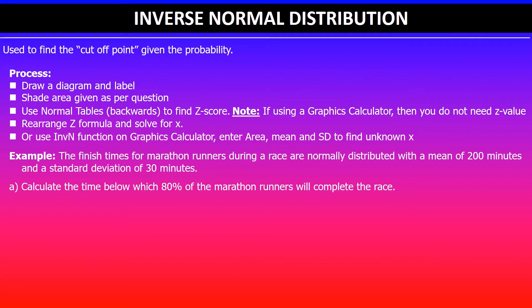In this question it says the finish times for marathon runners during a race are normally distributed with a mean of 200 minutes and a standard deviation of 30 minutes. Calculate the time below which 80% of the marathon runners will complete the race. In this case we're given the probability.